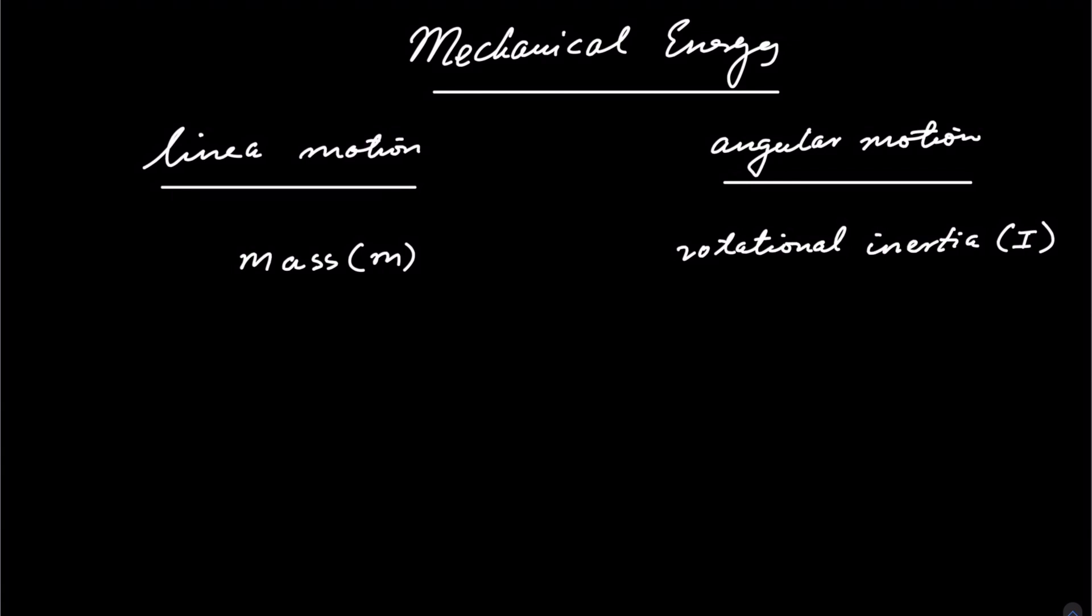Now, in linear motion, we would say that the kinetic energy E_k is half mv squared. And the equivalence of that equation in angular motion will basically be E_k, which is equal to half I instead of mass. And then what is the equivalence of velocity in angular space? That would actually be your omega. So that would be omega squared. Please just note that slight difference.